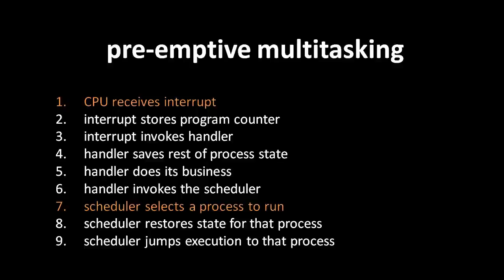You might also wonder how the scheduler chooses which process to run next. Using the simplest algorithm, the round-robin algorithm, the scheduler simply runs each process in turn, one after the other. While this ensures that every process gets run on a regular basis, the more sophisticated algorithms used by Windows, Linux, and other modern operating systems attempt to take into account which processes need processor time more than others.